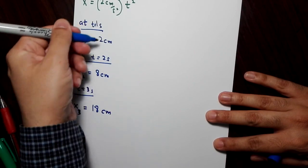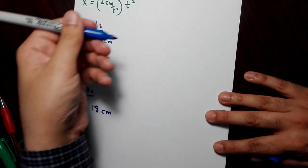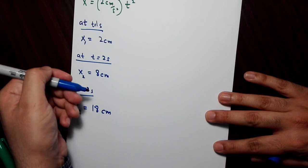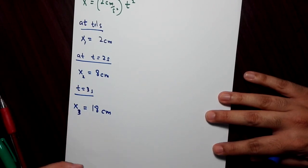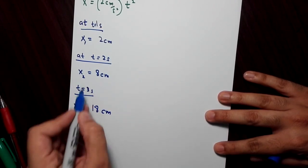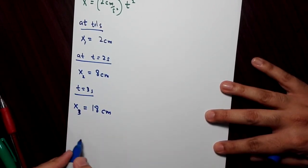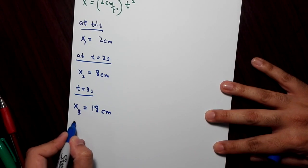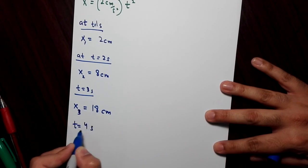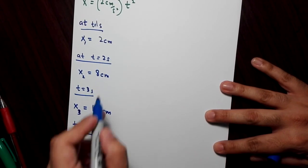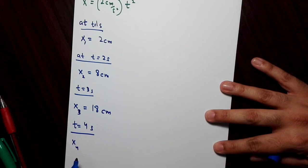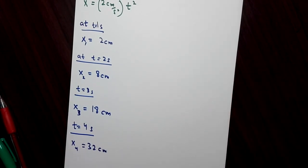You can see that this is a fairly large acceleration because the object is following a parabola and traveling really fast. At four seconds, we get two times 16, which is 32 centimeters. Let's plot the graph and see how the object is changing position.